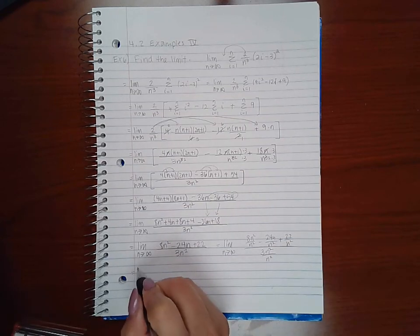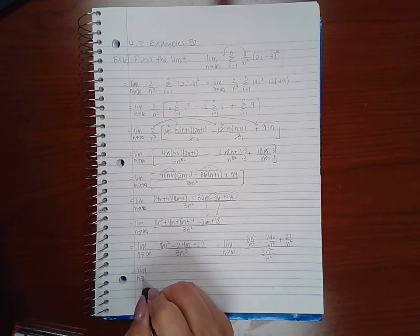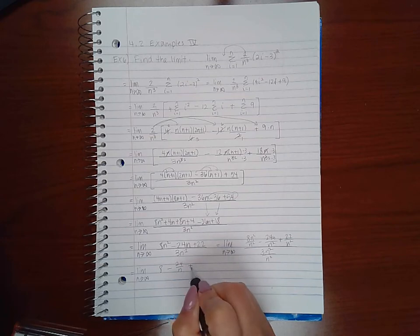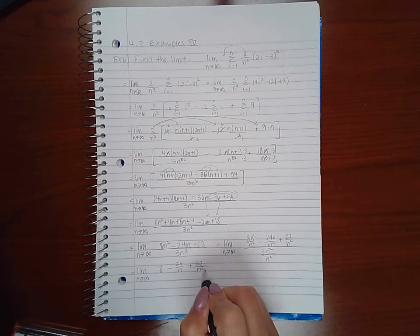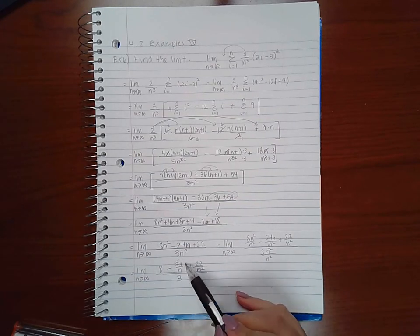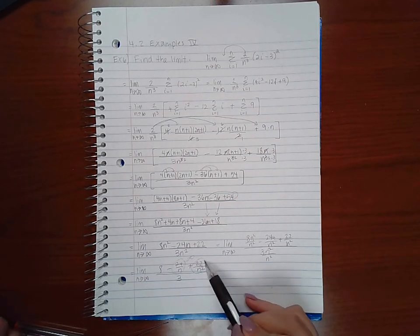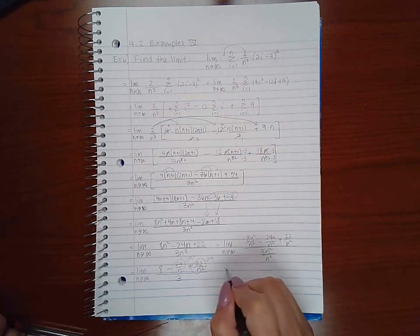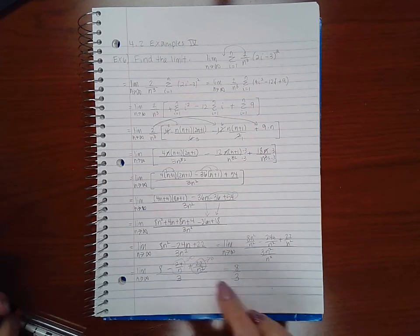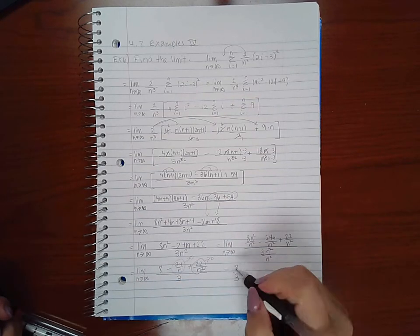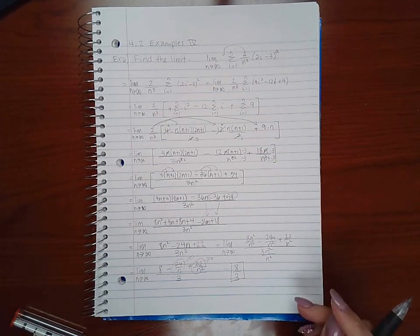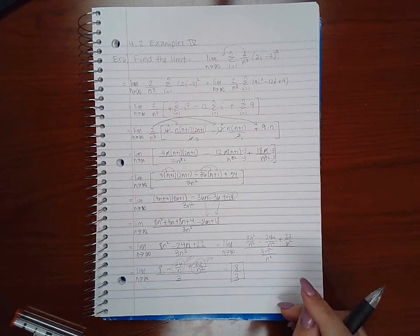So then this simplifies into 8 minus 24 over n plus 22 over n squared, over 3. Now as n goes to infinity, this fraction will approach 0, this fraction will approach 0, which will leave me with 8 over 3. Now that I've actually taken the limit, you should no longer be writing LIM. So this is the actual limit for this problem.